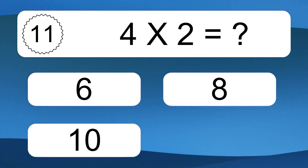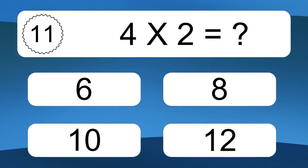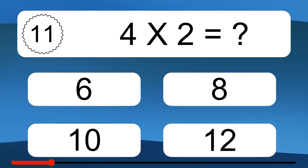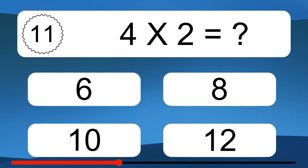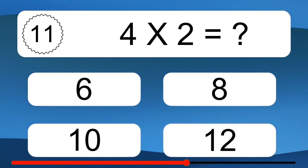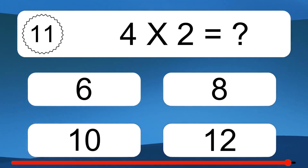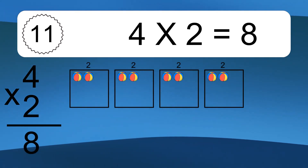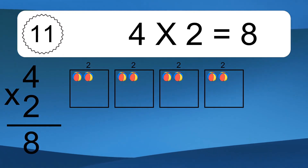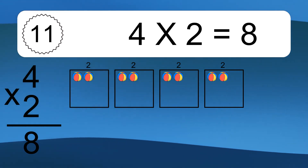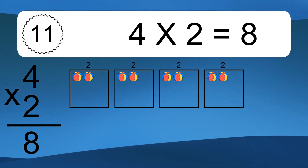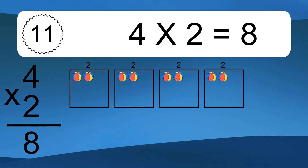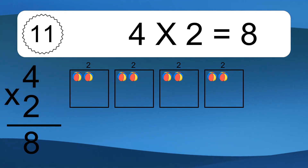4 times 2 equals what? We have 4 boxes, and each box has 2 colorful balls inside. If you count all the balls in all the boxes together, you will have 4 times 2 balls. This equals 8 balls.